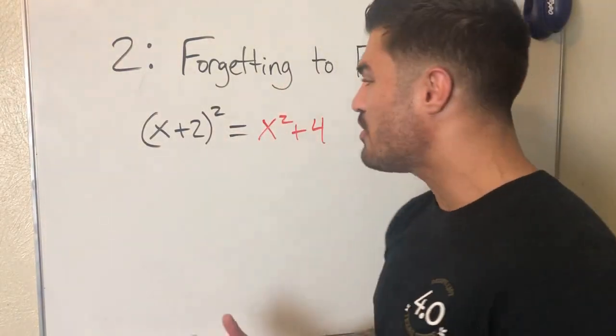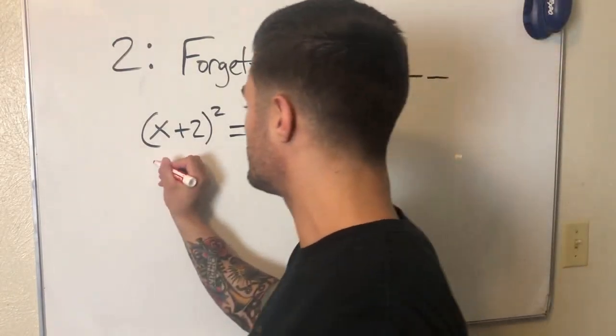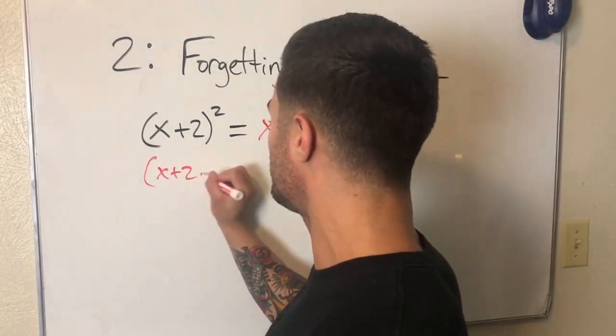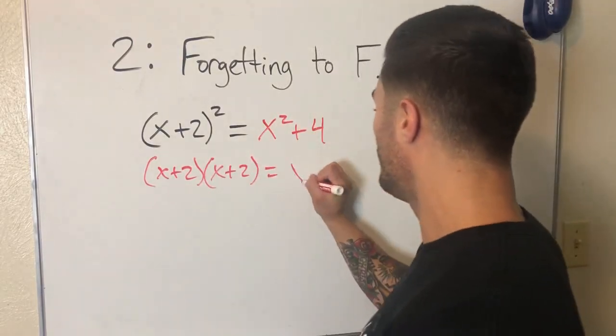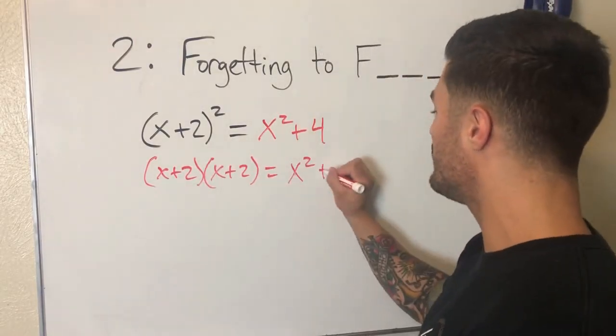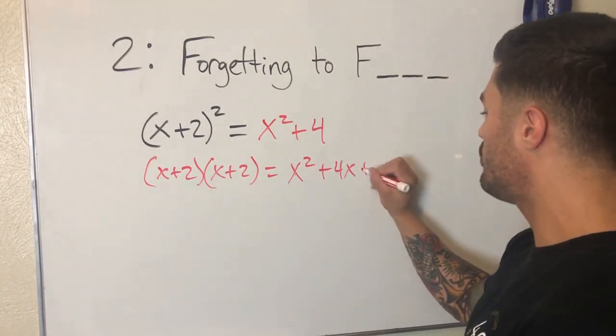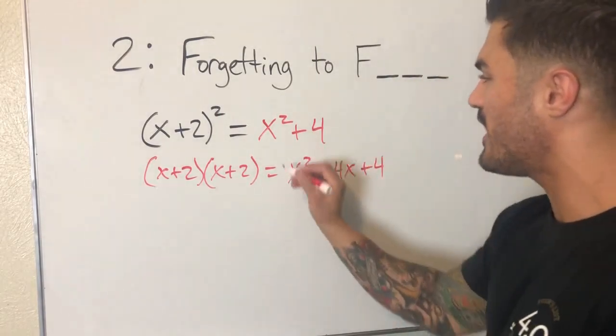Yes, squared means times itself, but what times itself? X+2 times itself. So I can write this out as (X+2) times (X+2). Okay, what does this equal? X squared, that's my first. The outer and inner give me plus 4X, plus 4. I was missing a whole 4X because I did it incorrectly and I killed a kitten. Don't forget to FOIL.